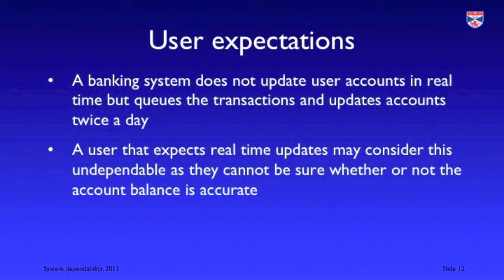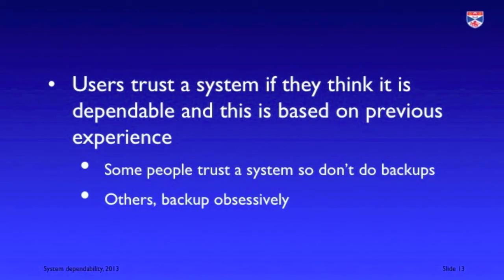For example, let's say there's a banking system that delays updating information so that it's only updated twice a day. Recent transactions are therefore not shown in the system. One user may be quite happy with this and consider it a perfectly acceptable and dependable system. Another user who has experience of a different system where transactions and accounts are updated in real time may feel that this system is undependable. There's also the extent to which a user trusts a system, and that trust is often affected by previous behaviour.